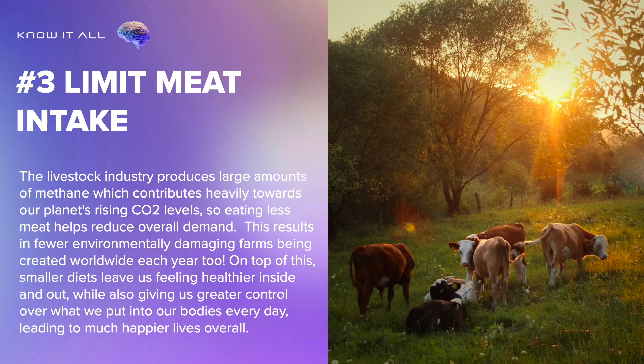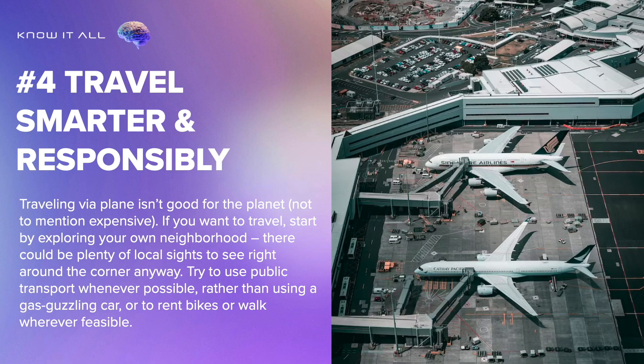This results in fewer environmentally damaging farms being created worldwide each year too. On top of this, smaller diets leave us feeling healthier inside and out, while also giving us greater control over what we put into our bodies every day, leading to much happier lives overall. 4. Travel smarter and responsibly. Traveling via plane isn't good for the planet. If you want to travel, start by exploring your own neighborhood — there could be plenty of local sites to see right around the corner. Try to use public transport whenever possible, rather than using a gas-guzzling car, or rent bikes or walk wherever feasible.